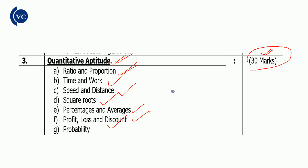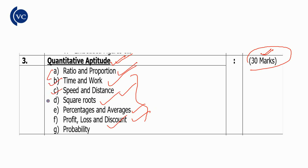The quantitative aptitude preparation is similar to SSC and Railway exam preparation, as the chapters overlap. With proper preparation, we can easily score 25 plus in this section.